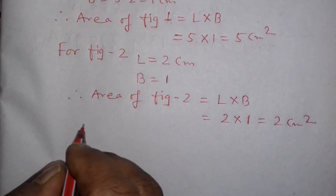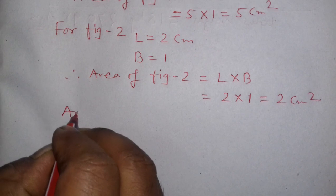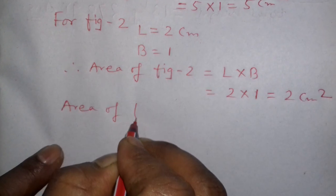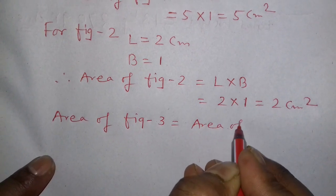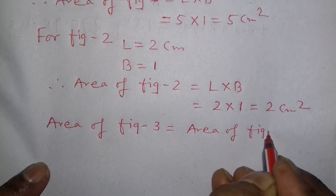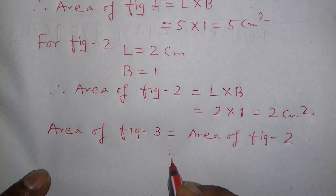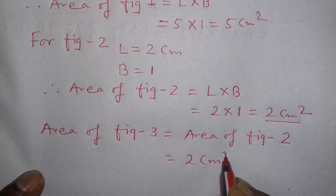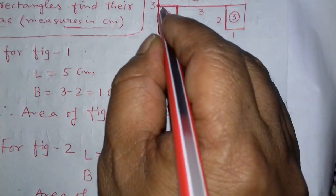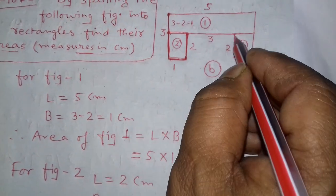And area of figure number 3 is equal to area of figure number 2. Area of figure 2 is equal to 2 centimeter square. Because these figures are also of same size.